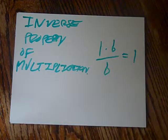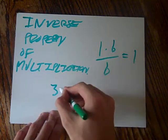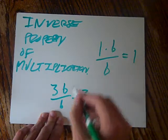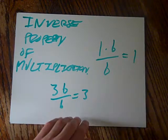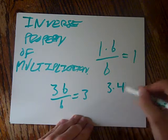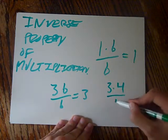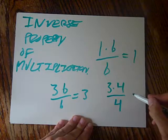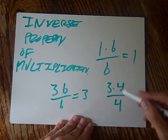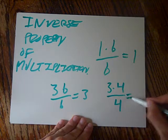But I realize this is true with any number. If you multiply 3 by b and divide it by b, it equals 3. So for example, let's say b was 4. So 3 times 4 divided by 4. Well, the 4's cancel out and you're left with 3.